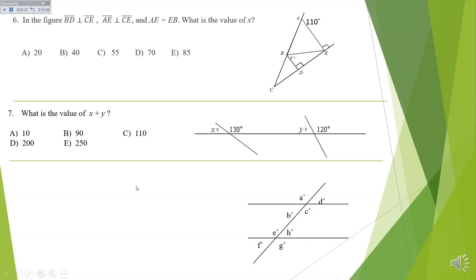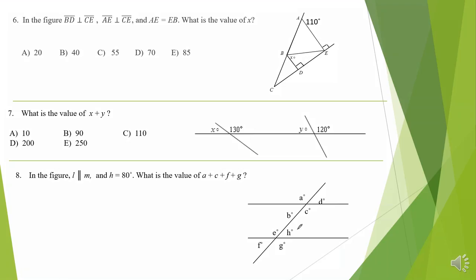Here comes another one — it's looking for the sum of several angles. H is 80 degrees. Here's your straight line: if this is 80, how much is this one? 100. If this is 80, you see your vertical angle here. Then you've got same side interior angles. You can just figure out each one of those angles and add them up — it's very easy.